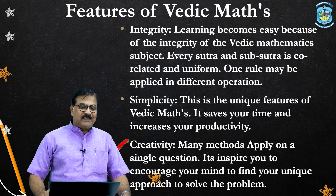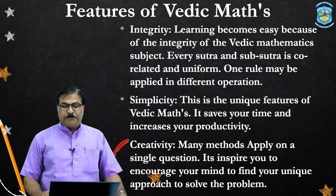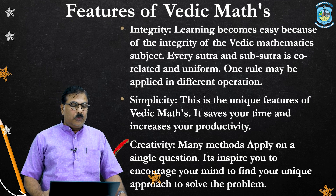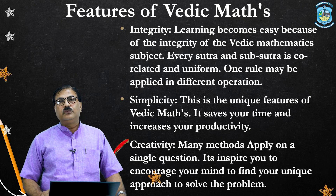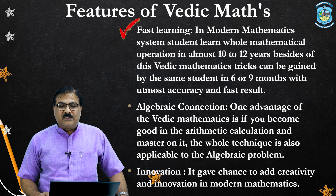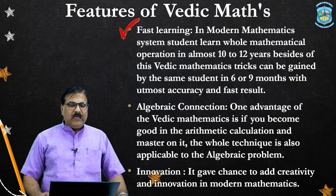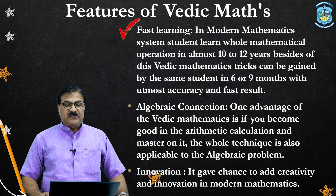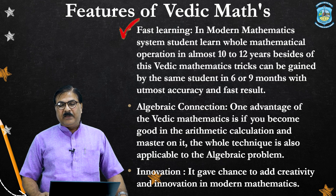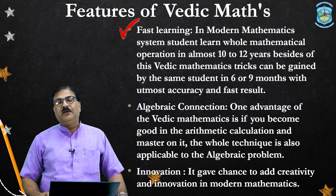The third feature is creativity — many methods can be applied to a single question, inspiring the mind to find a unique approach to solve problems. The next feature is fast learning — in the modern mathematics system, students learn whole mathematical operations in almost 10 to 12 years, whereas Vedic mathematics tricks can be gained by the same student in 6 to 9 months with utmost accuracy and fast results.